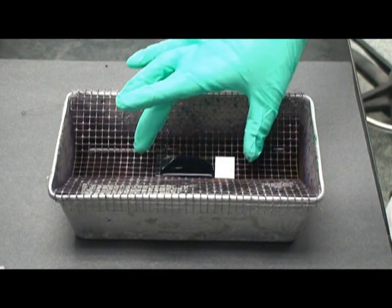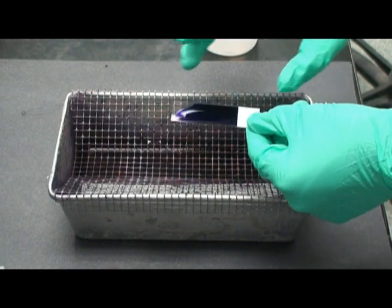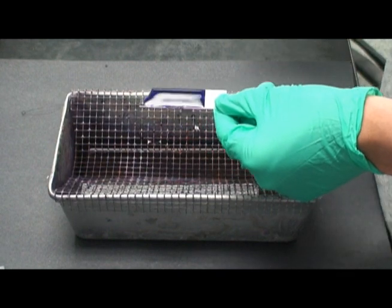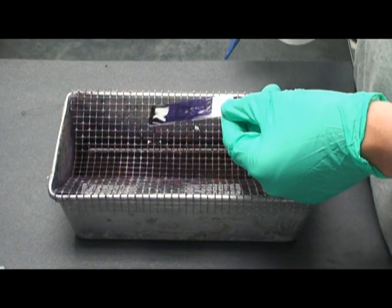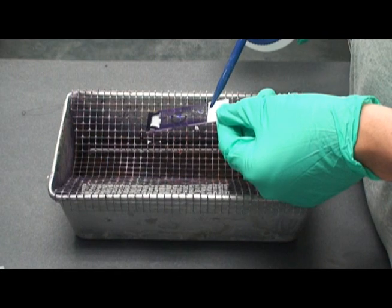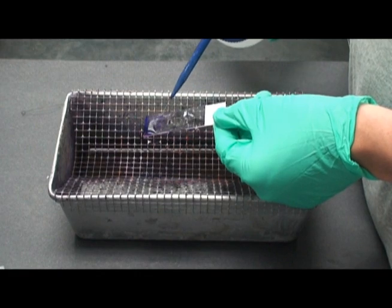Between each stain, the slide is to be rinsed with water. A gentle stream of water should be applied to the tilted slide, taking care not to spray directly onto the bacteria, as this may wash away the bacteria. It is not necessary to dry the slide until the entire Gram Stain is complete. Make sure to repeat this washing process between each stain.